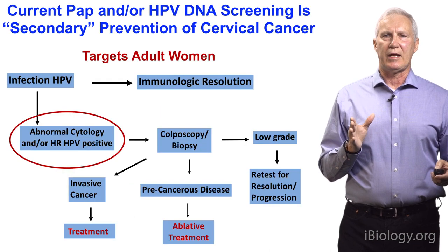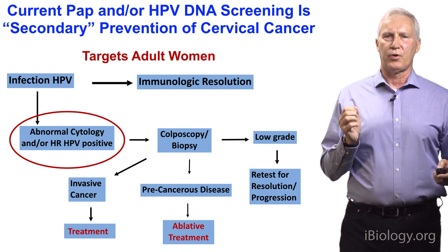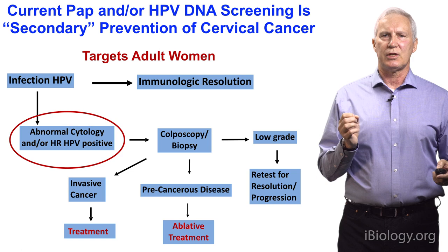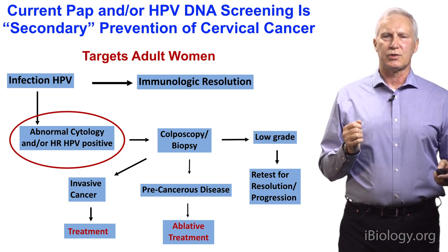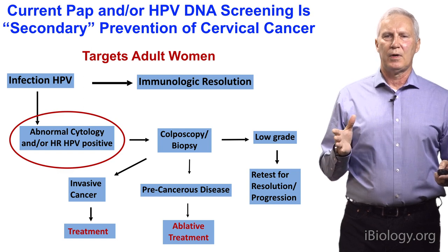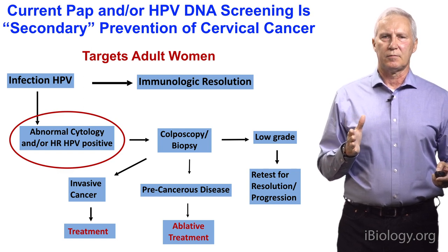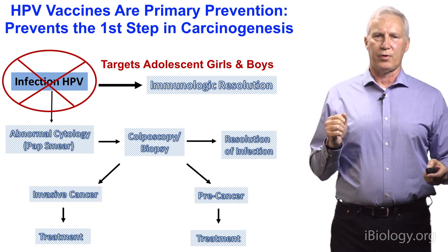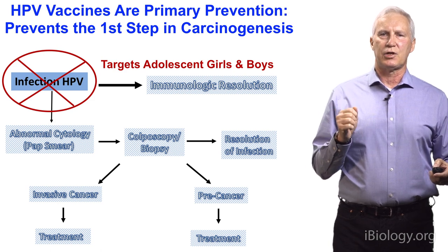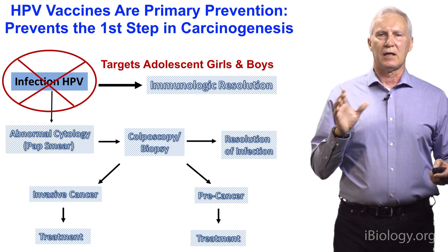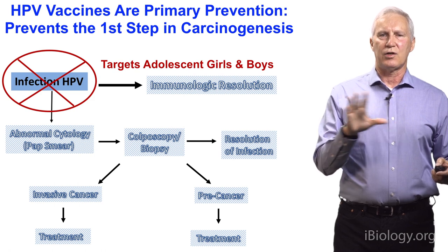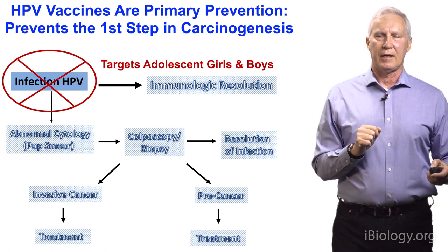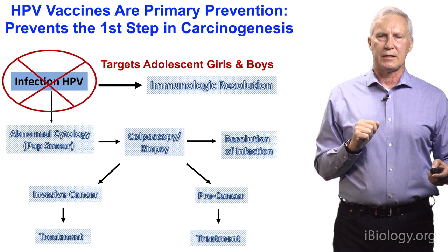It's important to point out that current pap screening is quite effective, but it's what we call secondary prevention, which targets adult women who already have infections and have been diagnosed with a cervical abnormality for further follow-up and eventually ablative treatment. What we're talking about with the vaccines is primary prevention, which can target both adolescent girls and boys, eliminate the initiating event, and prevent all the downstream follow-up required in secondary prevention.